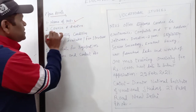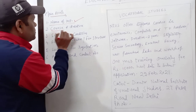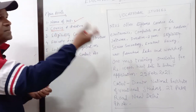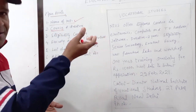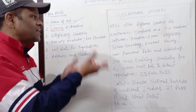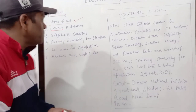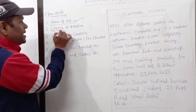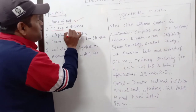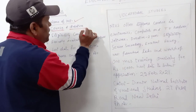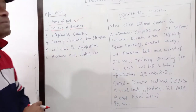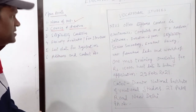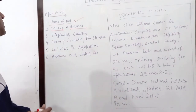Second point: course and duration. Whatever course that coaching center or institution is providing, you have to mention that, along with the duration — for how many years or how many months the particular course is going to be.